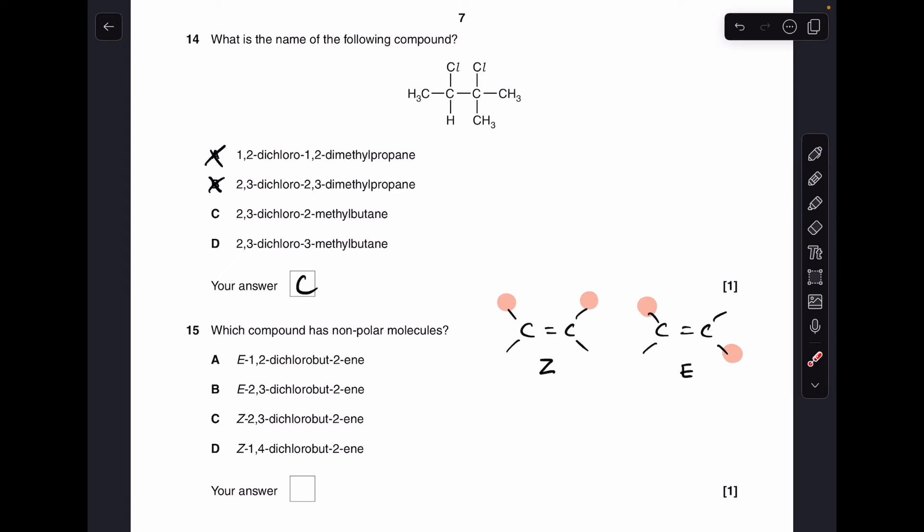Moving on to number 15. Just a quick reminder about E isomerism. These highlighted circles are the priority groups. We've got the priority groups on the same side of the double bond. So they're both up the way I've drawn that. So that's the Z isomer. E isomer. They are diagonally opposite each other. Nonpolar molecules could never be Z because you've got this imbalance of the electron density. Both sort of pushing it going in that direction. So we'll cross out the two Z options.